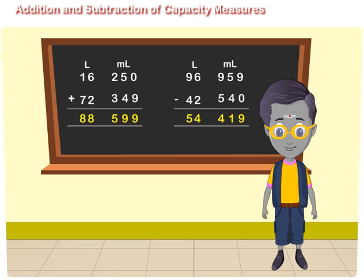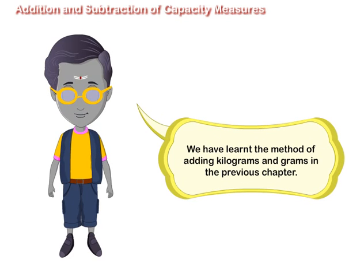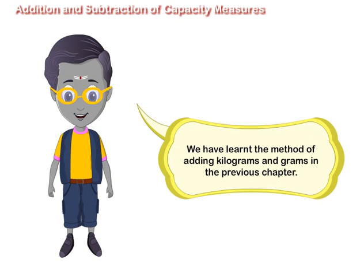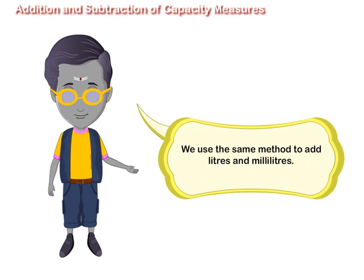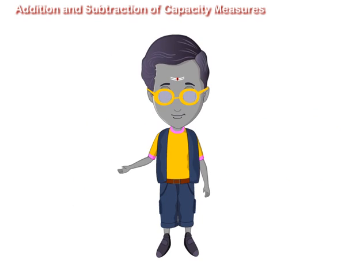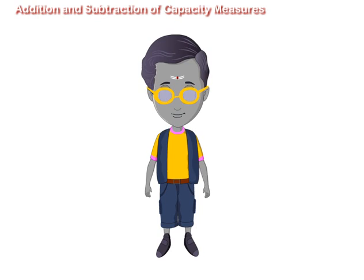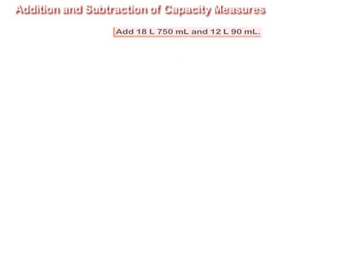Addition and subtraction of capacity measures. We have learned the method of adding kilograms and grams earlier. We use the same method to add liters and milliliters. We take an example to illustrate the method of addition of capacity measures.